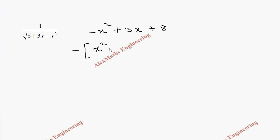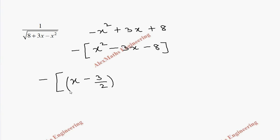Inside the bracket we have x² − 3x − 8 since the minus sign has been taken common. As per the completing square procedure, instead of x² we write x with the same sign, half of 3 is 3/2, put whole square, subtract (3/2)² which is 9/4, then write the last term minus 8.